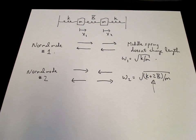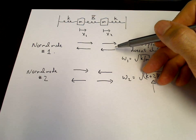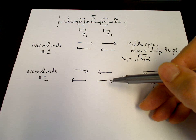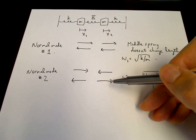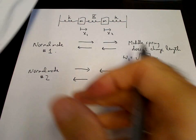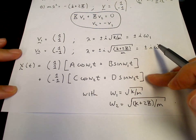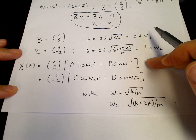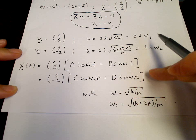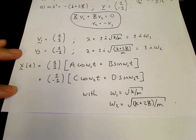When the masses exhibit normal mode one motion, there is only one frequency, omega 1. When the masses exhibit normal mode two motion, there is only one frequency, omega 2. The general motion of the two masses is a linear superposition of these two normal modes: the a and b terms correspond to normal mode one, and the c and d terms correspond to normal mode two.